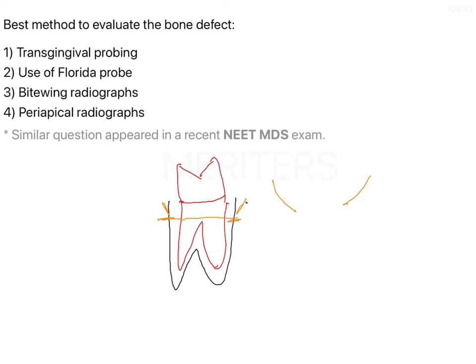However, looking at the options given, you have transgingival probing, use of a Florida probe, bitewing radiographs, and periapical radiographs. Periapical radiographs in periodontology are specific in nature and help increase specificity. Bitewing radiographs are useful to identify calculus and proximal surface lesions.